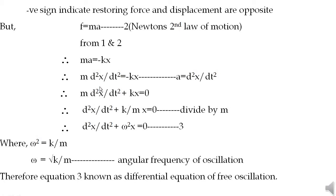Dividing throughout by m: d²x/dt² + (k/m)x = 0. Setting k/m = ω² (where ω is the angular frequency of oscillation), the equation becomes d²x/dt² + ω²x = 0 (equation 3). This is the differential equation of free oscillation.